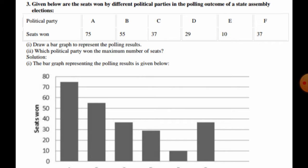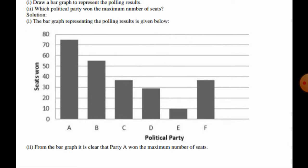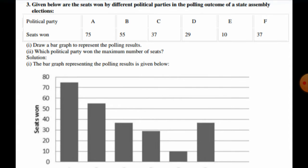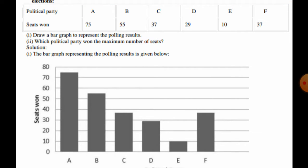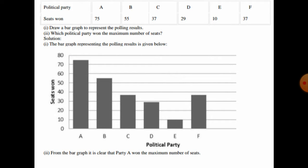On the x-axis we represent the names of political parties A, B, C, D, E, F. On the y-axis we take seats from 0 to 80 in increments of 10, up to 80. From the bar graph, it is clear that Party A won the maximum number of seats — 75 — and it has the longest bar.